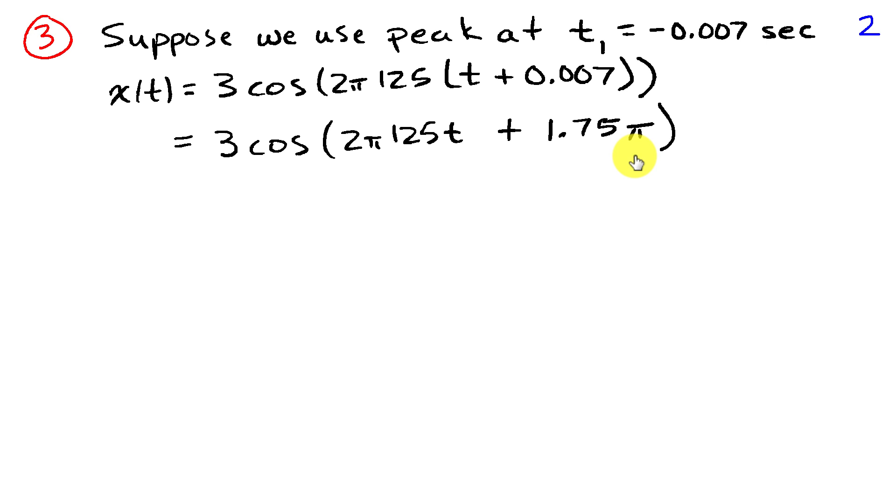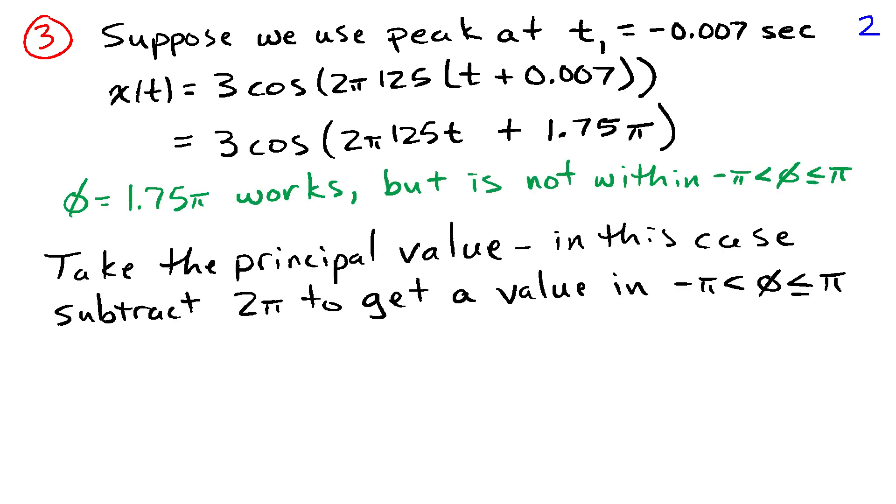If I distribute the 2 pi times 125 over both of these terms, I see that the phase becomes 1.75 pi, which is a different answer than we found using the other peak. And it turns out this is a correct answer. However, the phase is not unique. We can always add 2 pi or subtract 2 pi from a phase value, and it's going to give us the same answer. So this answer works, and it is correct for the sinusoid, but it is not a unique answer in the sense that it's not within the range minus pi to pi.